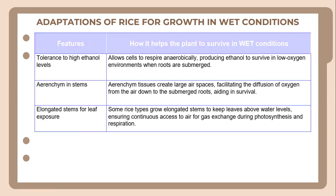Let's look at how rice adapts for growth in wet conditions. It has about three key features. First, rice is tolerant to high ethanol levels, which allows cells to respire anaerobically, producing ethanol to survive in low-oxygen environments when roots are submerged. Second, it has aerenchyma tissue in the stem, which creates large air spaces, facilitating the diffusion of oxygen from the air down to submerged roots, aiding in survival. Third, rice also has elongated stems for leaf exposure, as the plant grows elongated stems to keep leaves above the water level, ensuring continuous access to air for gas exchange during photosynthesis and respiration.